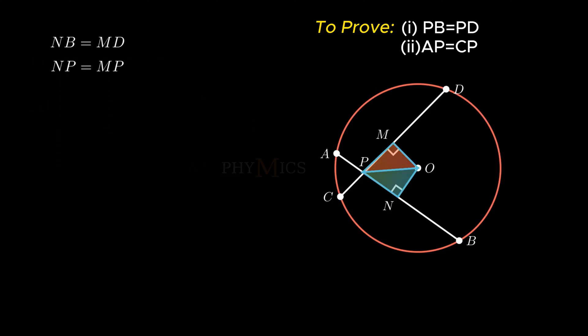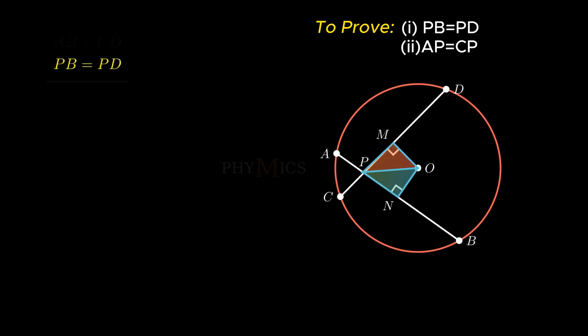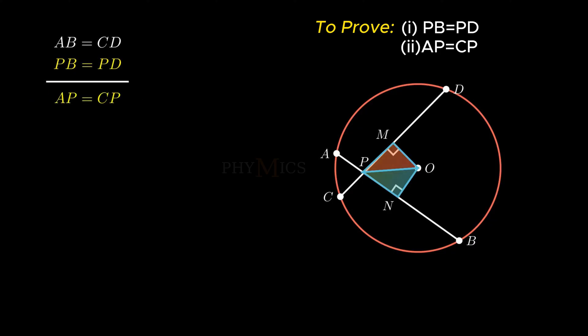On adding the two equations, we get the sum of segment NB and NP equals the sum of segments MD and MP, which gives major segment PB equals major segment PD. Similarly, to prove minor segment AP equals minor segment CP, we subtract the corresponding major segments PB and PD from equal chords AB and CD respectively. On subtracting, chord AB minus major segment PB equals chord CD minus major segment PD, thus minor segment AP equals minor segment CP. Hence, the problem is solved. This was it for the video. See you in the next one. Thank you for watching.